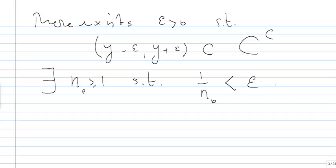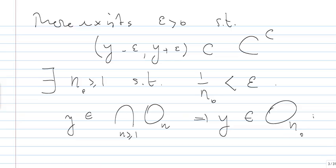In this case, we use the fact that Y belongs to the intersection of all the O_Ns, which will imply that Y, in fact, belongs to O_N0.